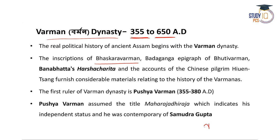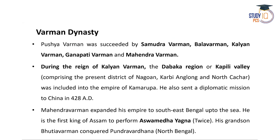The first ruler of the Varman dynasty is Pushyavarman, who ruled from 355 to 380 AD. He assumed the title Maharaja Dhiraaja, indicating his independent status. Pushyavarman was contemporary with Samudragupta, the famous North Indian ruler of the Gupta dynasty. Pushyavarman was succeeded by Samudravarman, Balavarman, Kalyanavarman, Ganapativarman, and Mahendravarman.